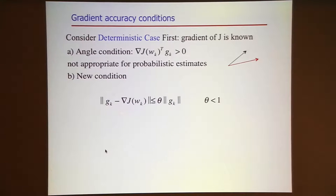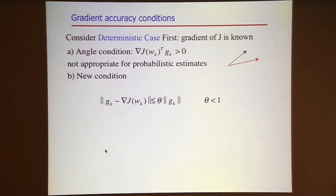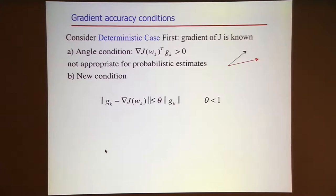The way it's going to work is as follows. We're going to measure this quantity here. So g is something I compute—I know what it is. The exact gradient I don't know. But I would like, in principle, for this difference to be a constant less than 1 times the norm of the stochastic gradient.